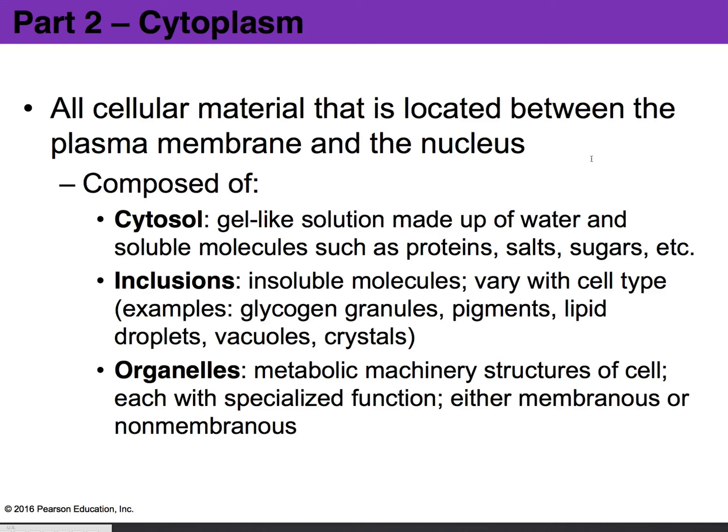The cytoplasm is made up of three main things. First, you have a fluid — a gel-like fluid called the cytosol, made up primarily of water. In addition to that, we also have particles and molecules such as proteins, salts, and some sugars. This fluid provides the medium for the other structures within the cytoplasm to move about and for all chemical reactions to take place.